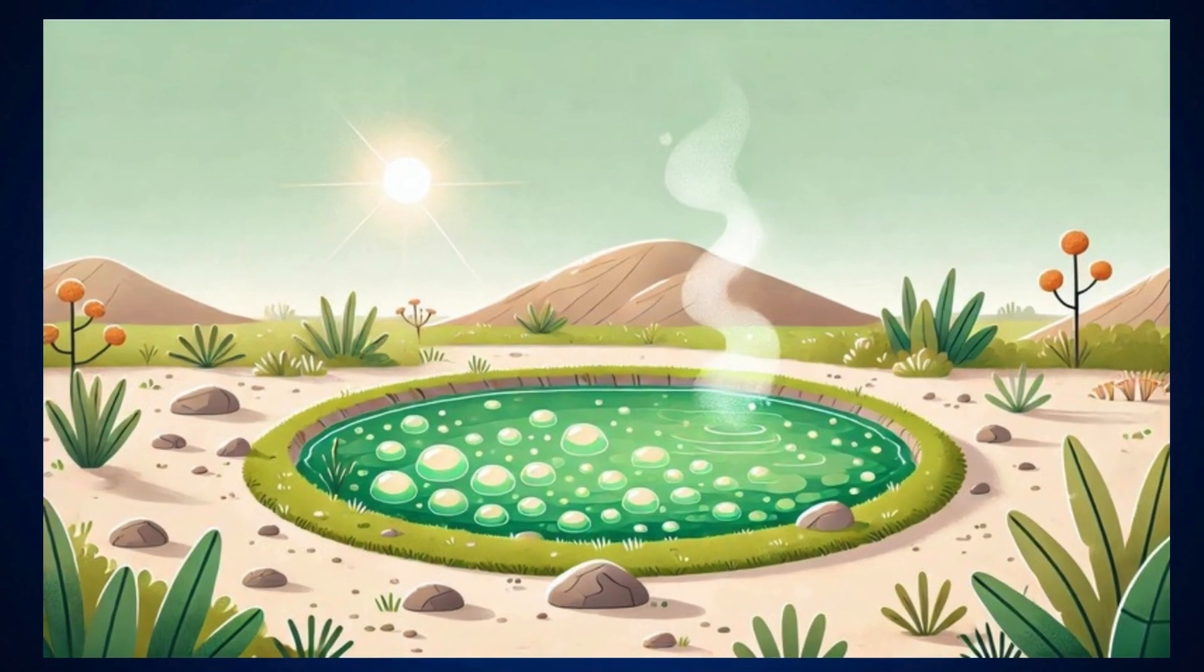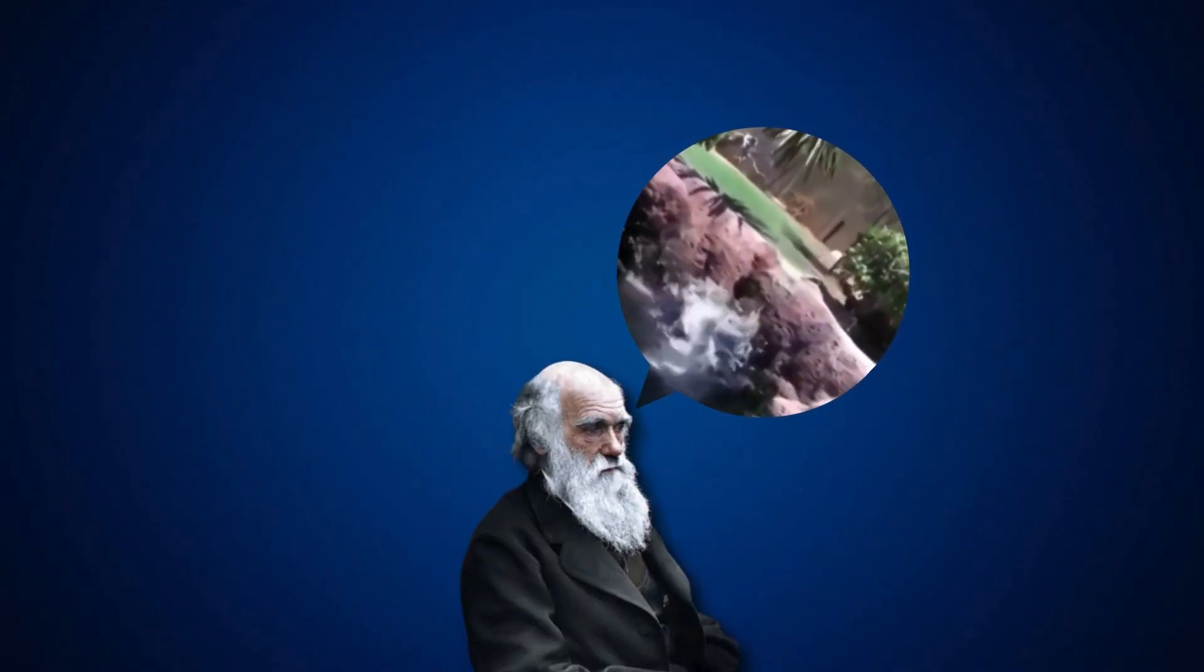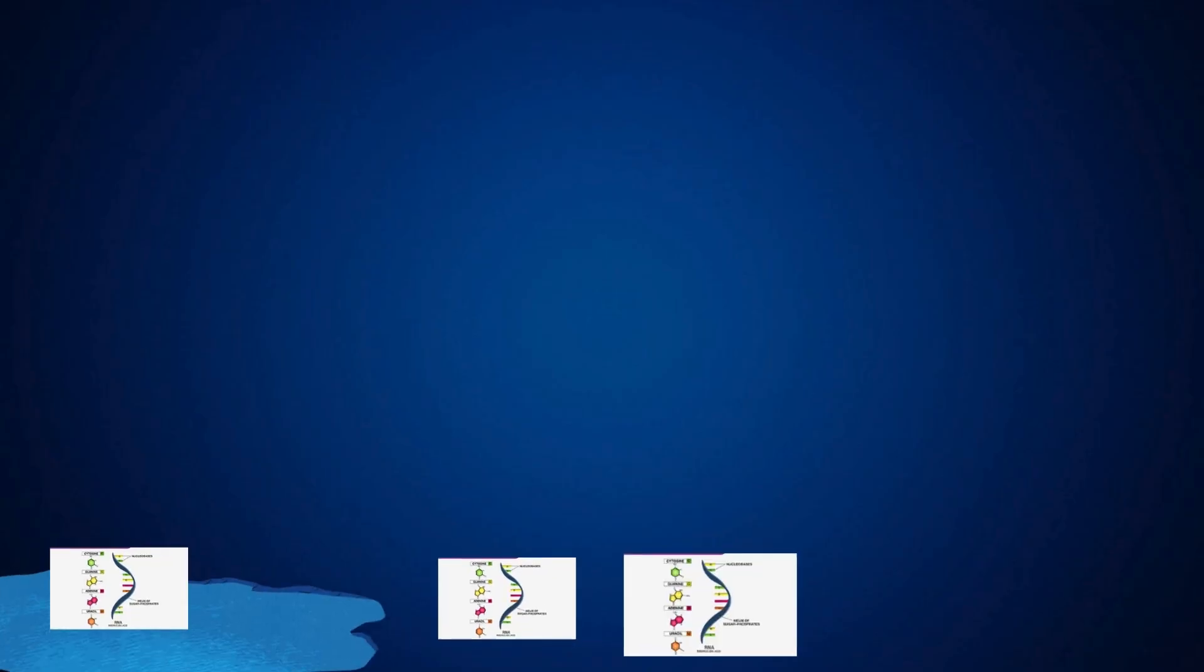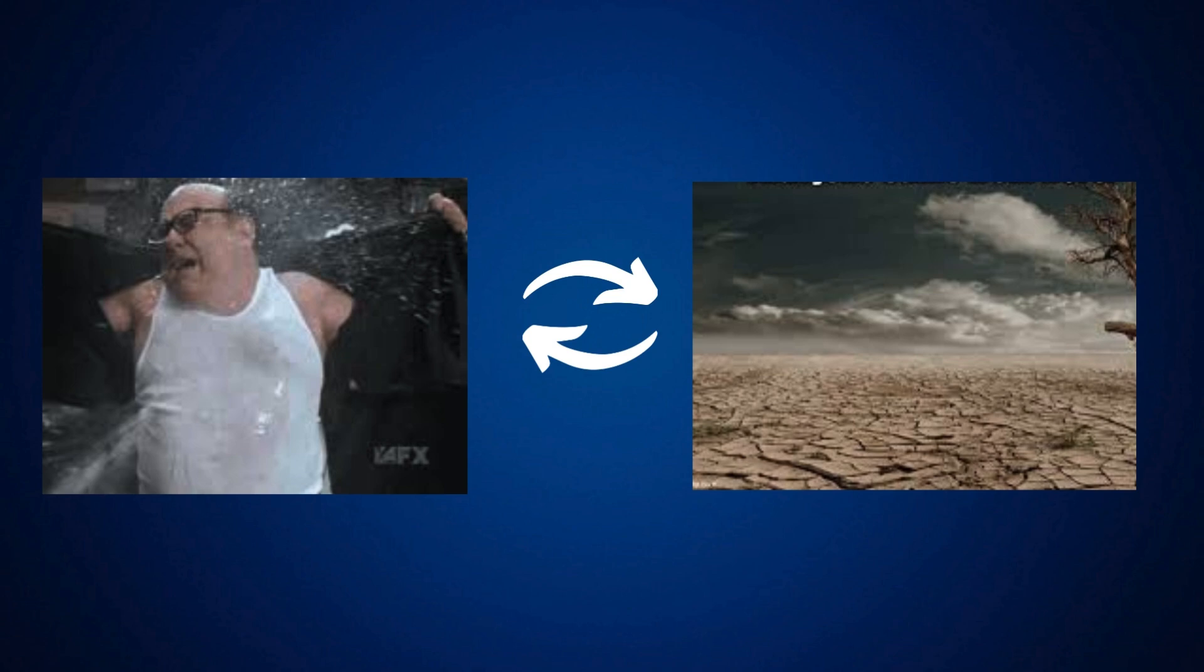However, another theory suggests life emerged in shallow ponds on land. Charles Darwin himself once speculated that life might have started in a warm little pond. In 2017, researchers led by John Sutherland demonstrated that the basic components of RNA could form in small bodies of water, especially if they went through cycles of wetting and drying, which concentrated molecules and drove chemical reactions forward.